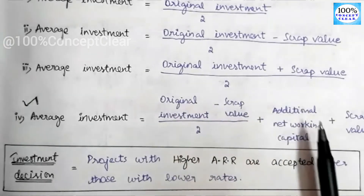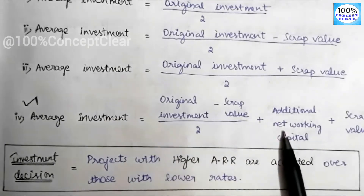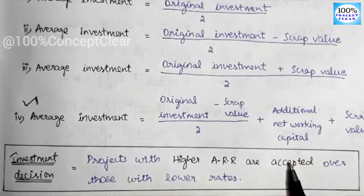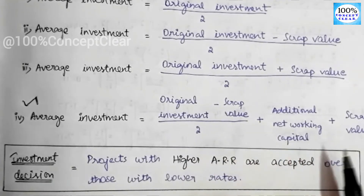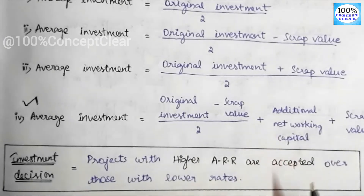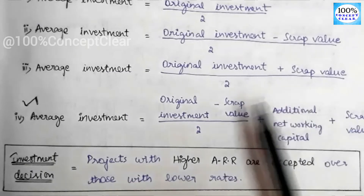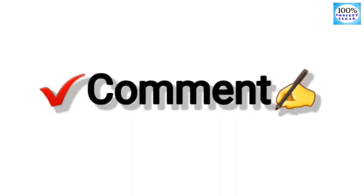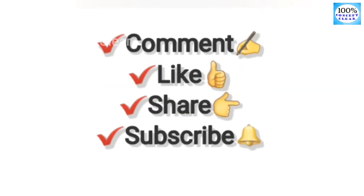In contrast, for the payback period method, we accept the project with the lower payback period. So in the ARR method we accept higher rates, while in the payback period we accept lower periods. If you have any doubt, please like this video and share it with your friends. If you have any questions, please subscribe to our channel. Thank you for watching!